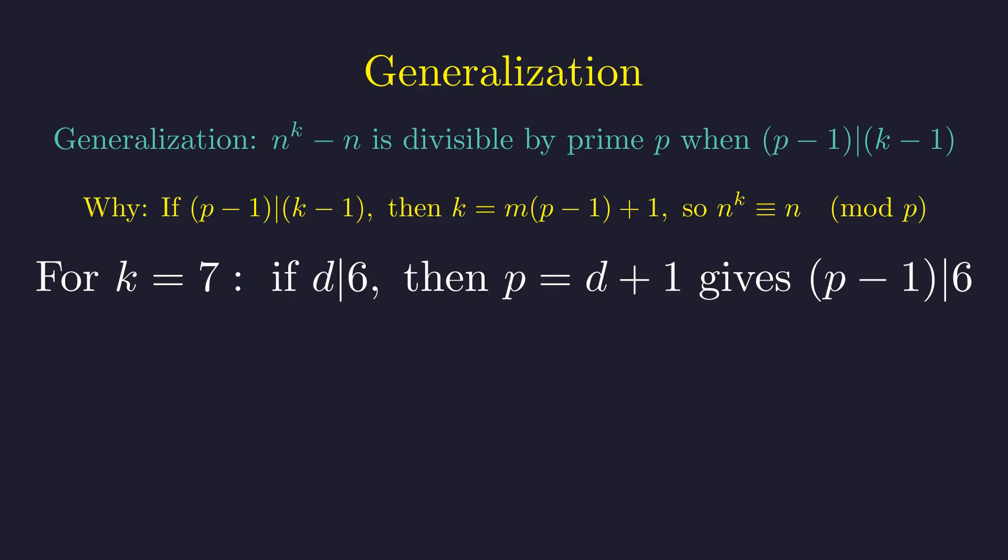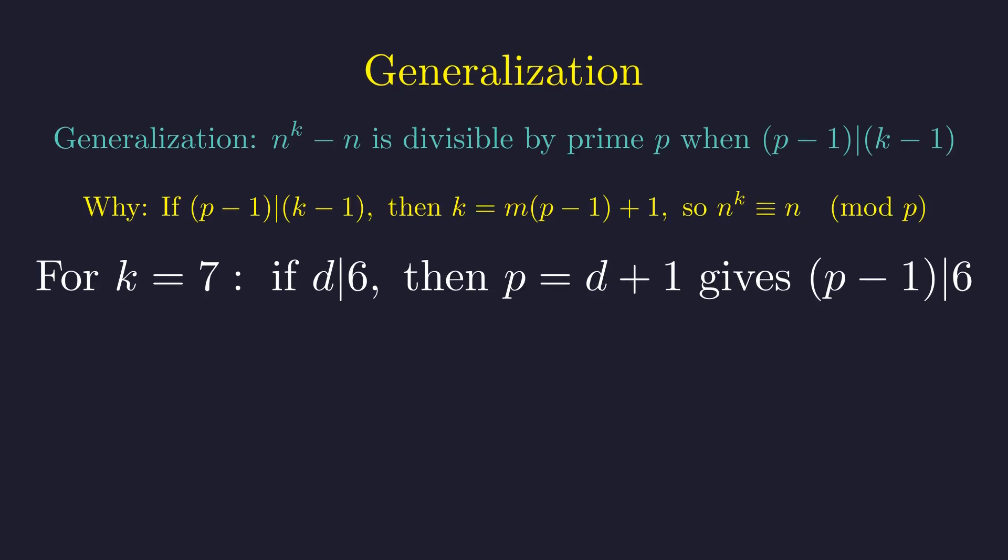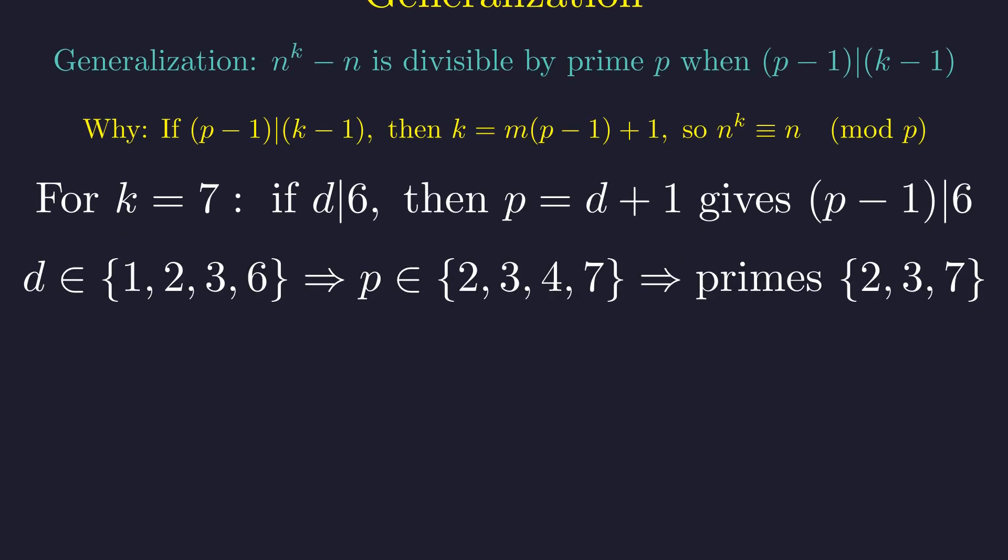In our case with k = 7, we look for primes p where (p - 1) divides 6. If d is a divisor of 6, then p = d + 1 gives us such a prime. The divisors of 6 are 1, 2, 3, and 6. Adding 1 to each gives us 2, 3, 4, and 7. Since 4 isn't prime, we're left with 2, 3, and 7. And their product is exactly 42.